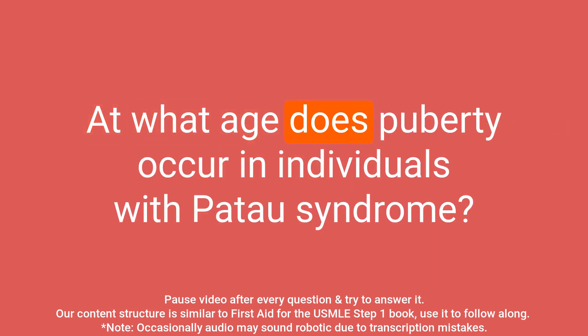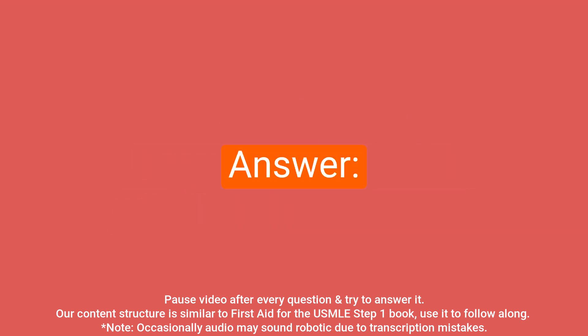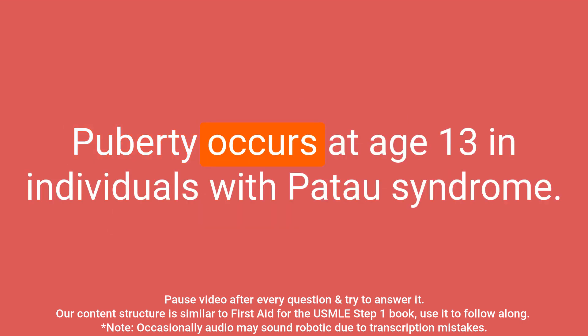Question: at what age does puberty occur in individuals with Patau syndrome? Answer: puberty occurs at age 13 in individuals with Patau syndrome.